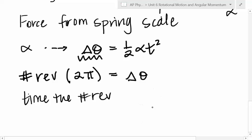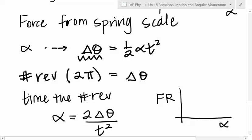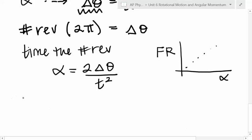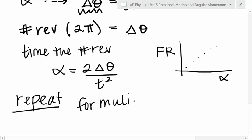And then, we can use this equation here to solve for the angular acceleration is two delta theta over T squared. And then, we will have our force at R, and we will have our angular acceleration, and we'll have a bunch of points, because what are we going to do next? We're going to repeat for multiple forces. How about that?